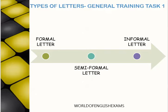For general training Task 1, it is a letter, and there are three different types: a formal letter written to a person who is unknown to you, a semi-formal letter when you know the person but the issue is serious, and an informal or personal letter written to someone you know well like a friend. You can get any of these letters, and the key point is to identify the type just by glancing at the question — the faster you identify it, the better you can write.